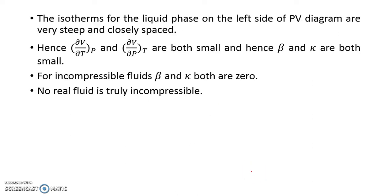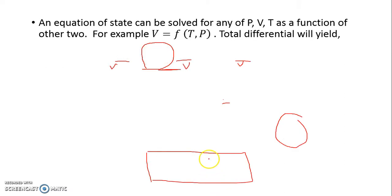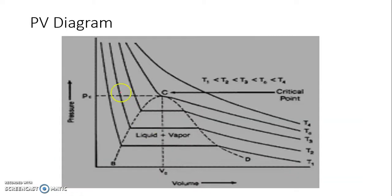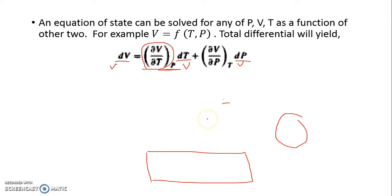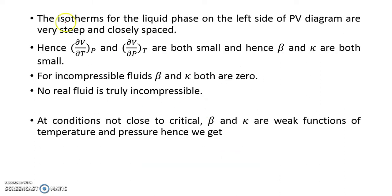The isotherms for the liquid phase on the left-hand side of the PV diagram are very steep and closely spaced. These are nothing but change in volume with respect to pressure at constant temperature. These are almost zero.